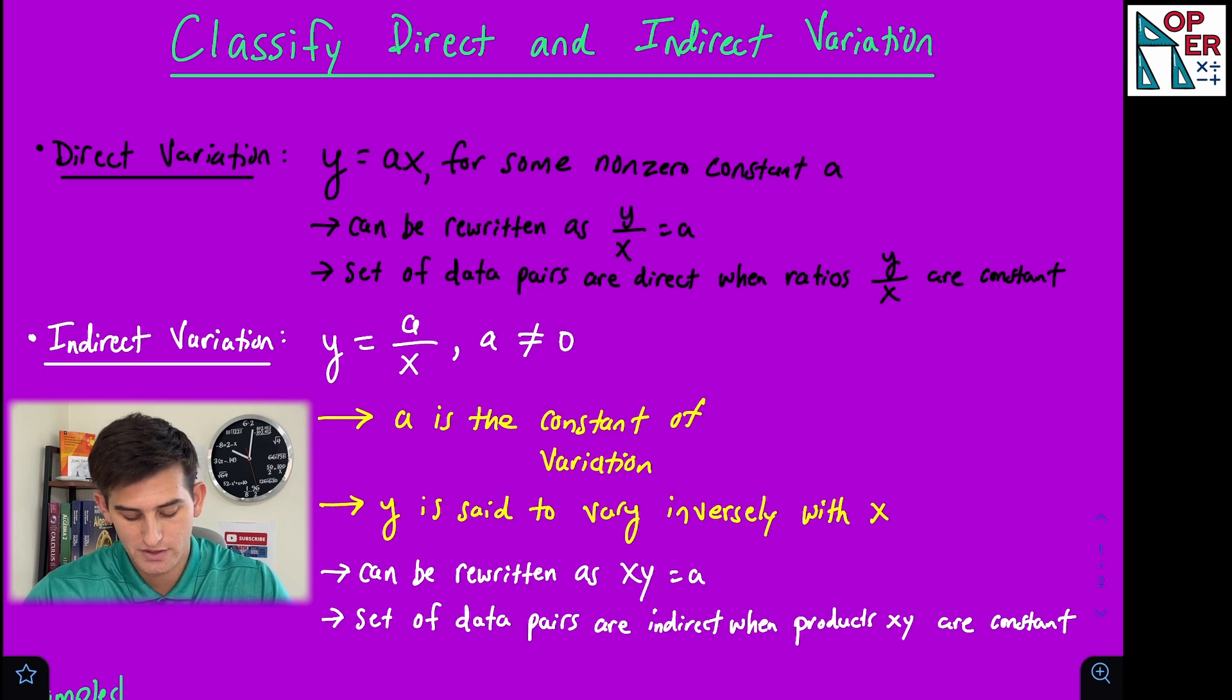For indirect, we would write our equation as y equals a divided by x. So now notice that x is in our denominator, and here a cannot be zero. A is commonly referred to as the constant of variation, and y is said to vary inversely with x.